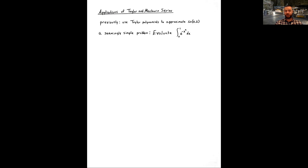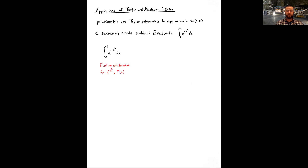We have a definite integral with limits 0 to 1, which can be interpreted as the area beneath the graph of the function e to the negative x squared. It seems simple — you could have sketched this when you were first introduced to definite integrals at the end of your Calc 1 course. So what's the problem? Let's try to proceed.